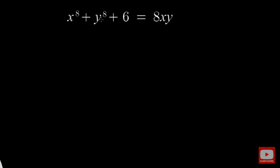To solve this equation, I am going to make use of the famous AM-GM inequality. For any given list of real numbers, the arithmetic mean of the numbers — that is AM — is always greater than or equal to the geometric mean.